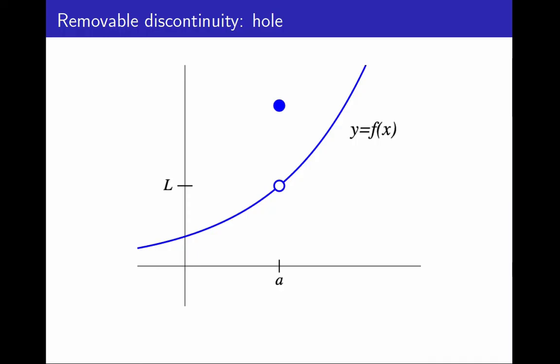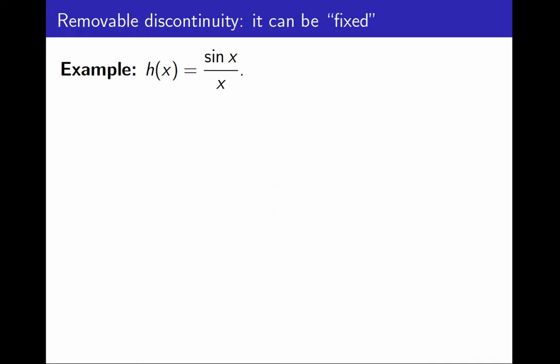Why is it called removable? Because it can be fixed. I will explain with an example. Consider the function h, defined by the equation h(x) = sin(x)/x. As x approaches 0, this function has limit 1, but h(0) is undefined.